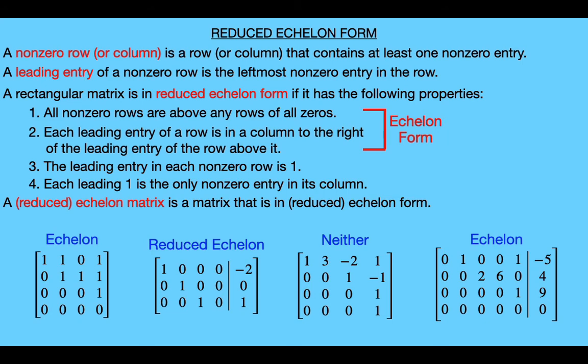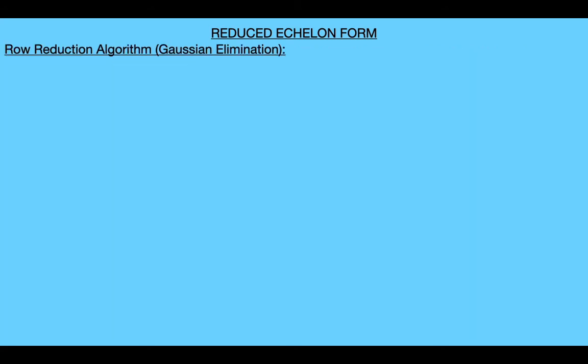Unfortunately, the augmented matrices of most linear systems are not automatically in reduced echelon form, but we can use our three elementary row operations to transform any matrix into a row equivalent matrix in reduced echelon form. Now I'm going to talk about a method for doing this that works on any matrix — we'll use something called the row reduction algorithm, also sometimes referred to as Gaussian elimination. This algorithm takes in any arbitrary matrix and outputs a row equivalent matrix in reduced echelon form.